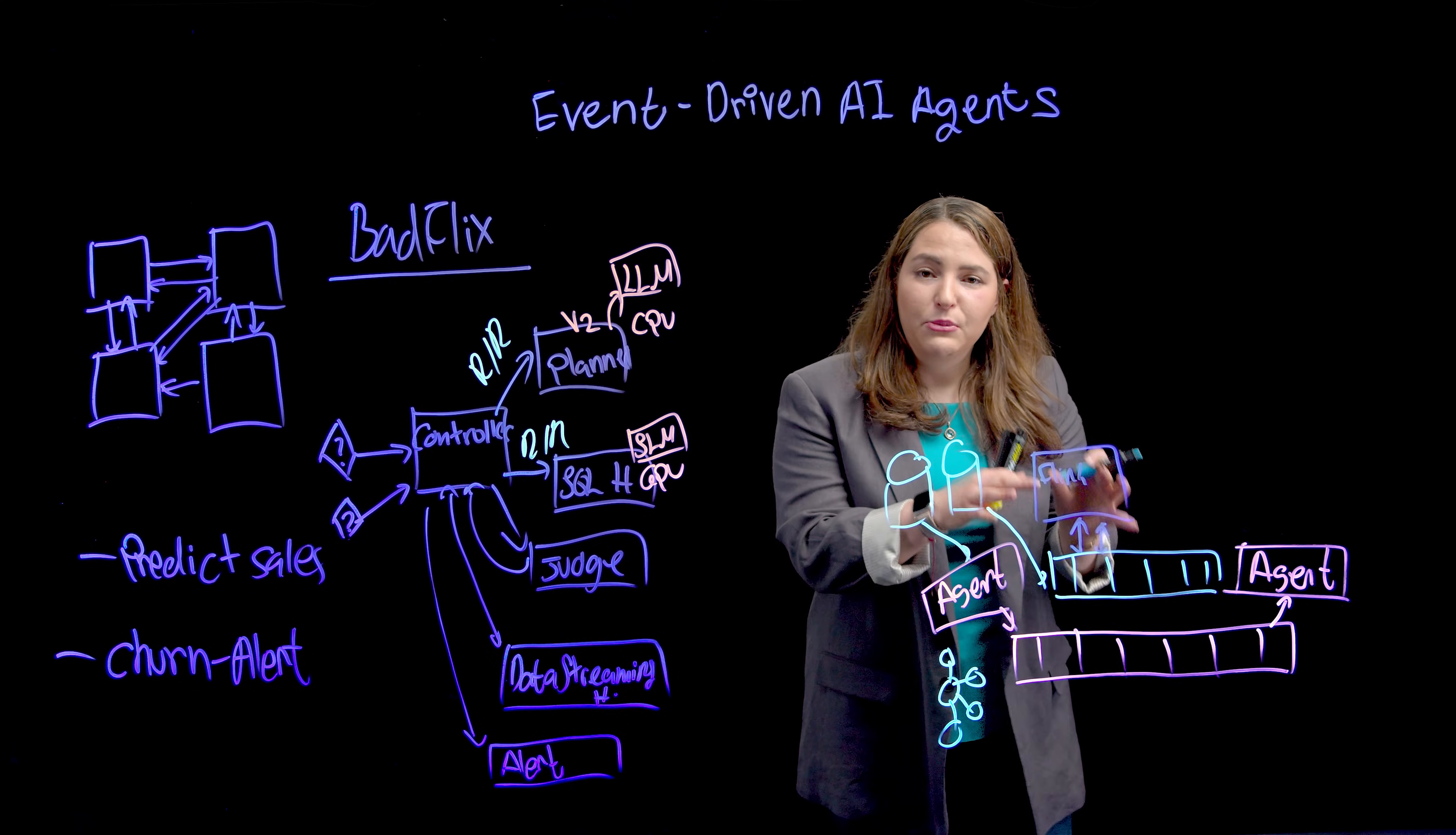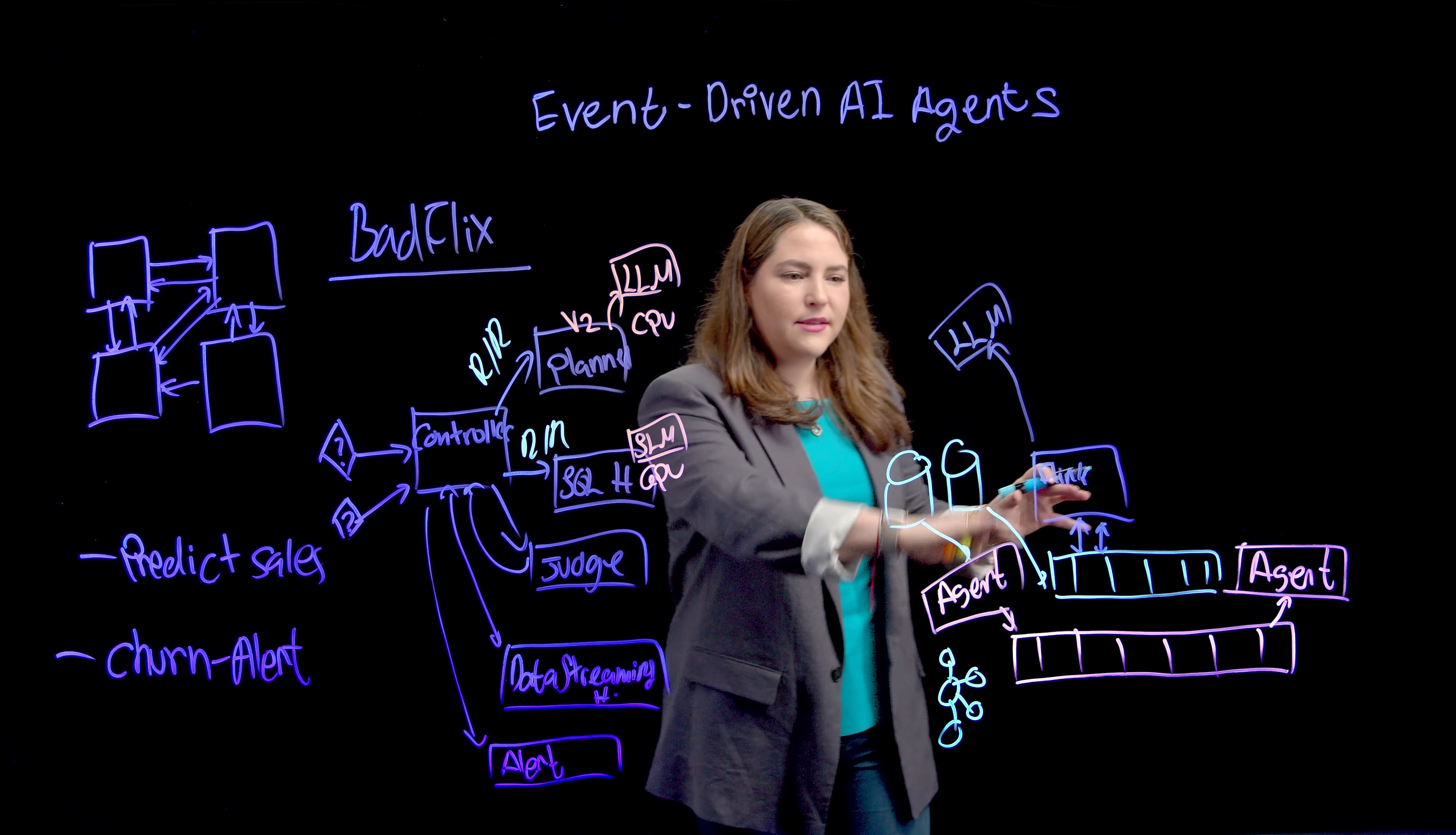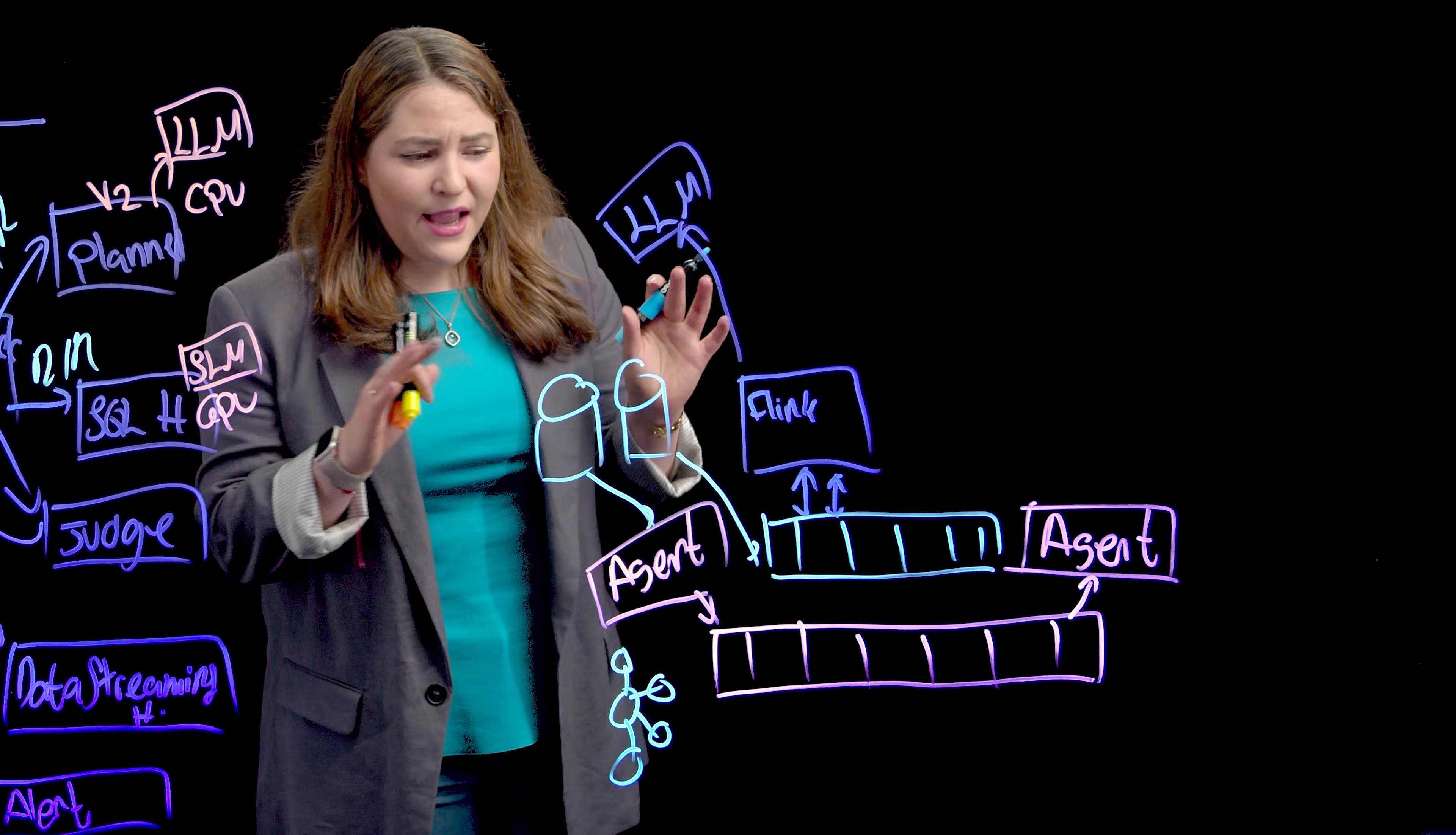So here my Kafka topics are now being exposed to Flink as a table. Flink, my data streaming processing engine, I can also use it for batch, but that's for a different day. And one of the interesting functionalities, it can work against an LLM. So Flink AI inference enables us to take some of the data, send it to an LLM and get back a response. This is very similar to the planner because now that we move this communication between the controller to the planner to actually be a Kafka topic here, Flink can take it and build a planner as a Flink app.